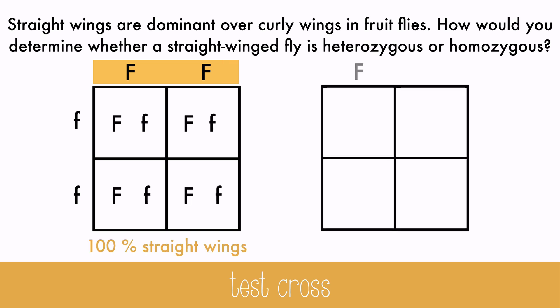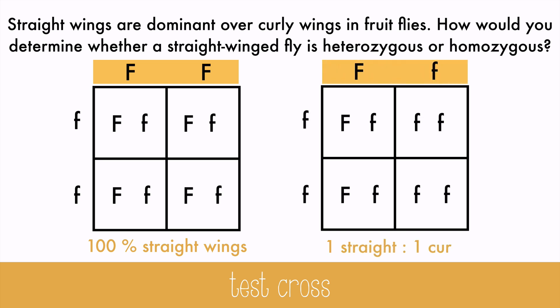If, however, the fly is heterozygous, then half of the offspring will have straight wings and the other half curly wings. This is a great test for lab animals and plants, but you wouldn't necessarily do this with humans.